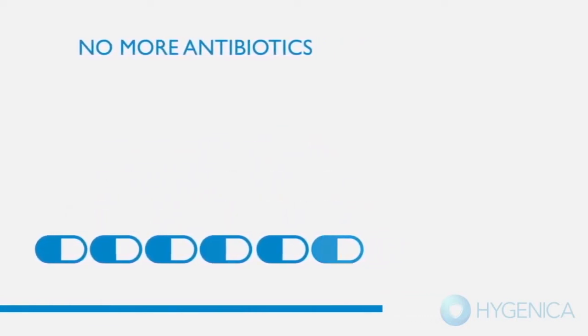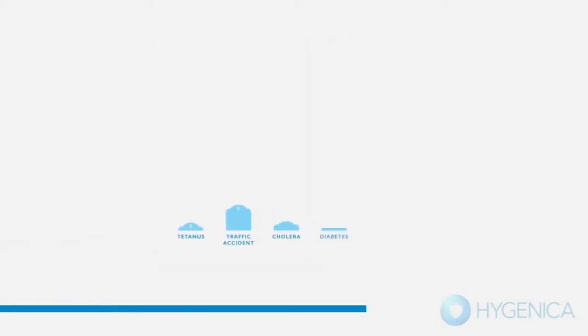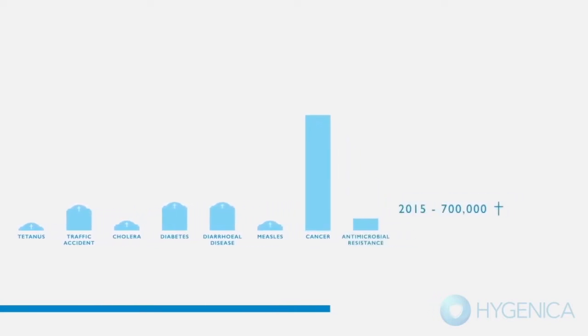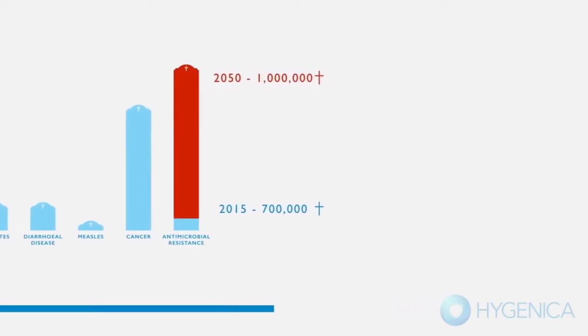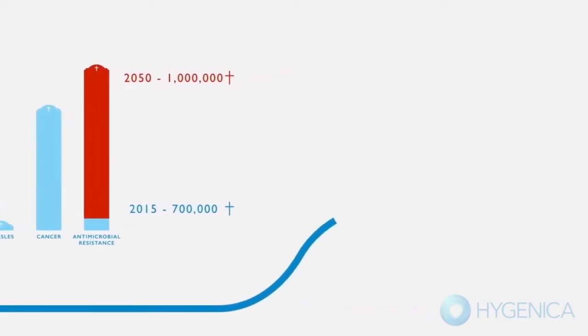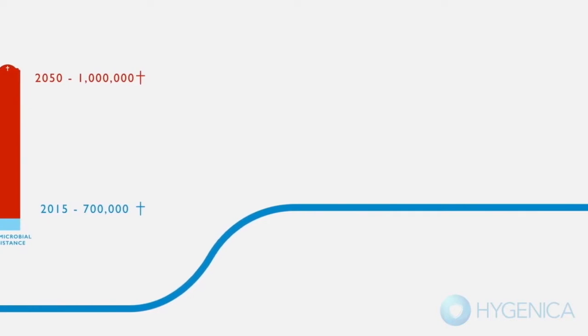Over the last decade, deaths due to resistant infections have become more common, and it's estimated that they will kill more people than cancer by 2050. Drug-resistant superbugs are spreading rapidly, and they threaten to send medicine back to the dark ages.